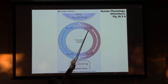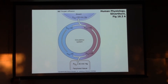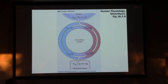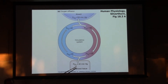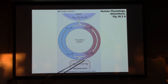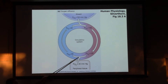So when that blood leaves the lungs, it's at a partial pressure of oxygen of 100 mmHg. That blood gets sent to metabolizing tissues that have a partial pressure of oxygen at or below 40 mmHg. So now we've got another pressure gradient, and oxygen diffuses from high pressure to low pressure - from the blood into those tissues.